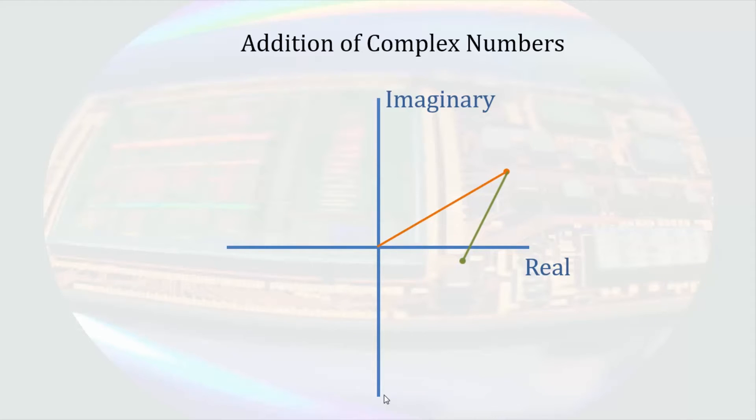The addition of the orange and green complex numbers results in the red complex number. If it is easier to see how this works, we can substitute in numbers. So let's say the orange dot represents 17 plus j10,